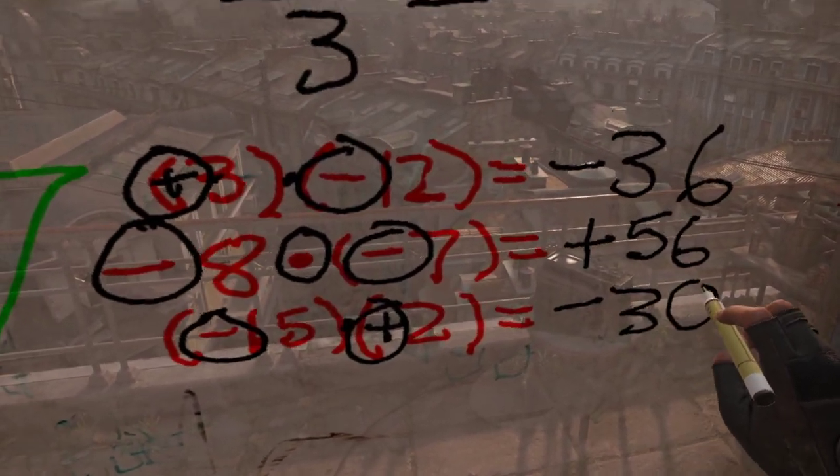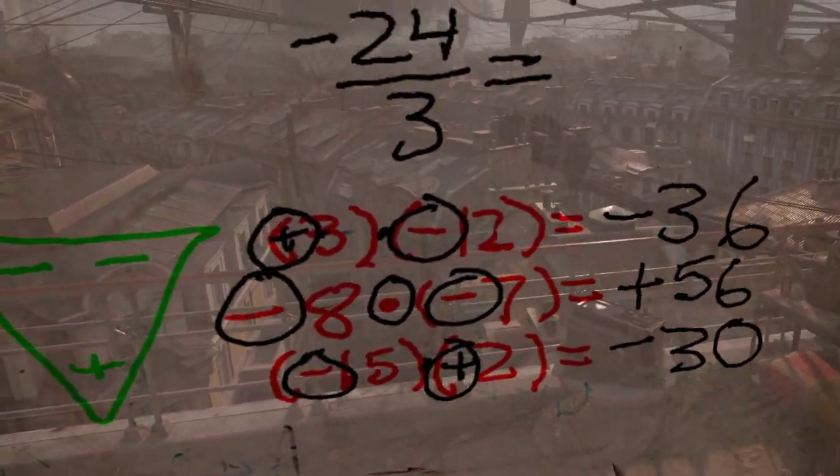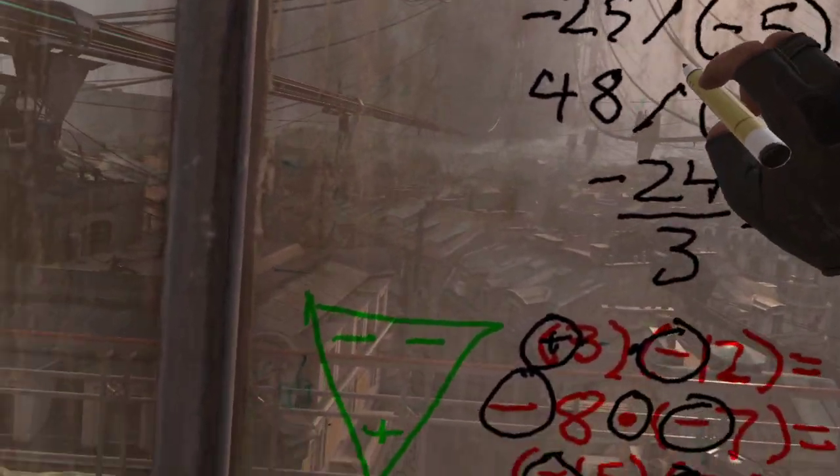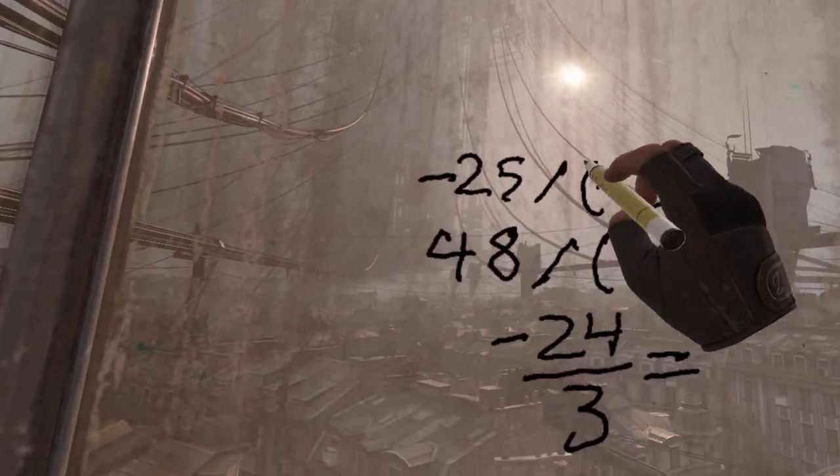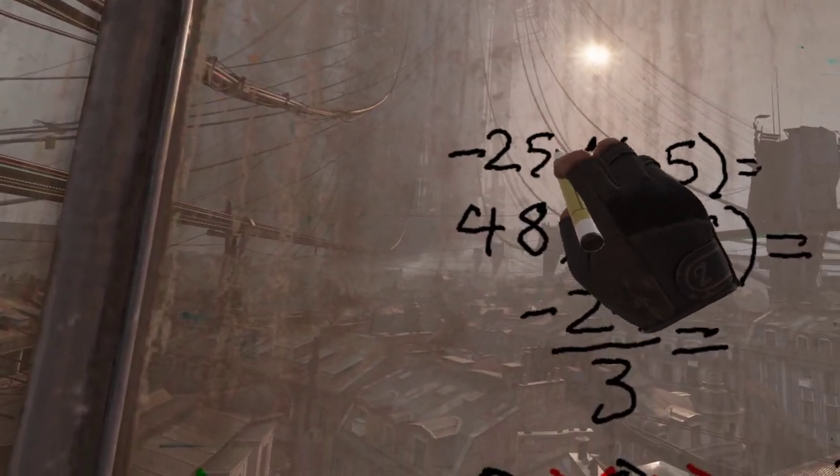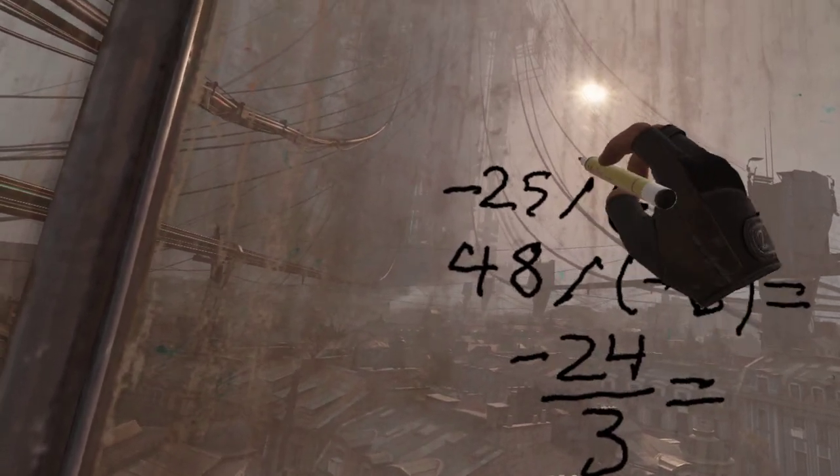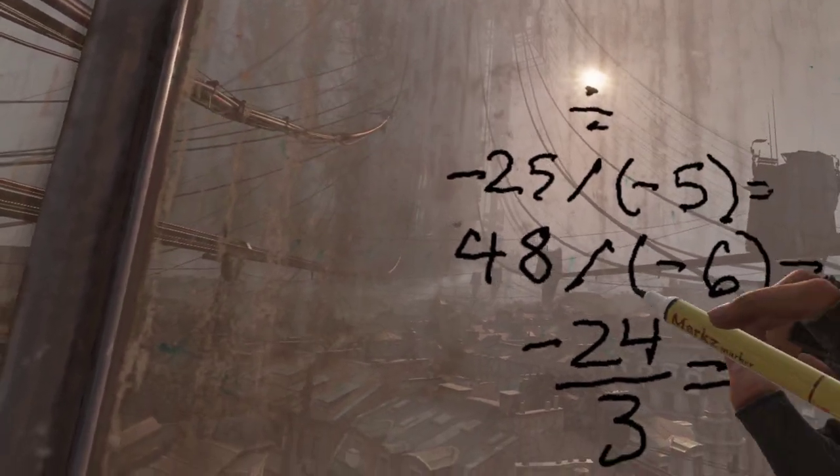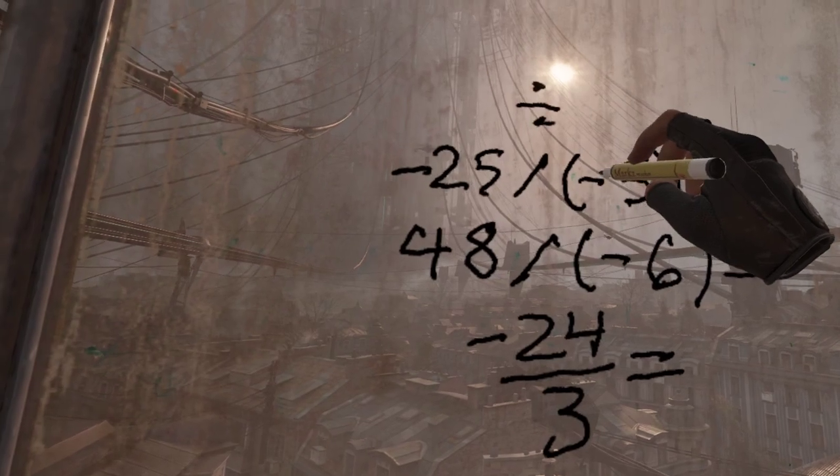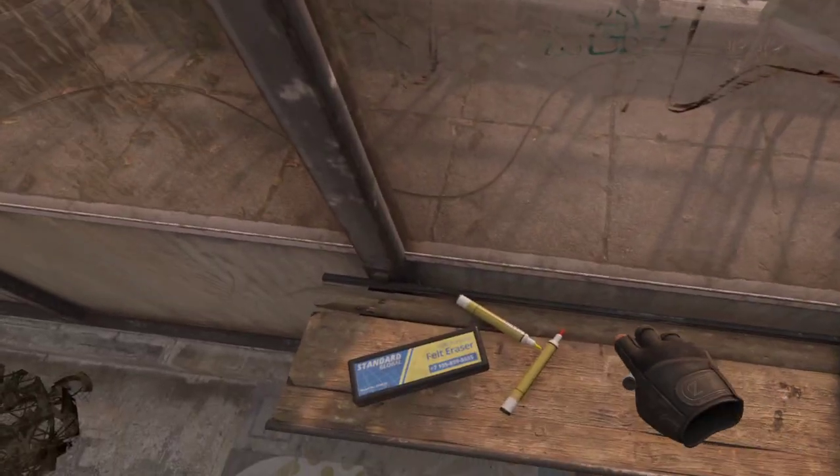Alright, so division. Remember we can still use the same strategy. So here we've got 25 divided by—remember that slash, it's the same thing as division—negative 25 divided by negative 5. Let's grab a different color here.